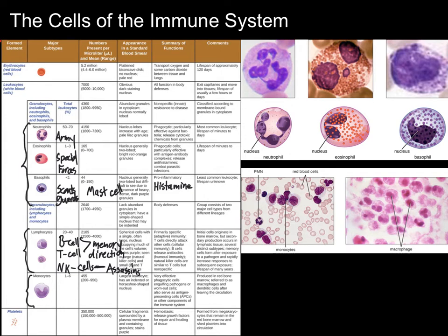Your body is a dictatorship — every cell in your body has to carry its papers. They can be interrogated and have to show exactly what proteins they're making. T cells can go up to any cell and say, 'Show me your papers. What are you doing? Show me the proteins you're making right now.' Those cells have to comply. If the T cell looks at them and sees viral proteins, it kills the cell. If it sees mutant cancer proteins, it kills the cell.